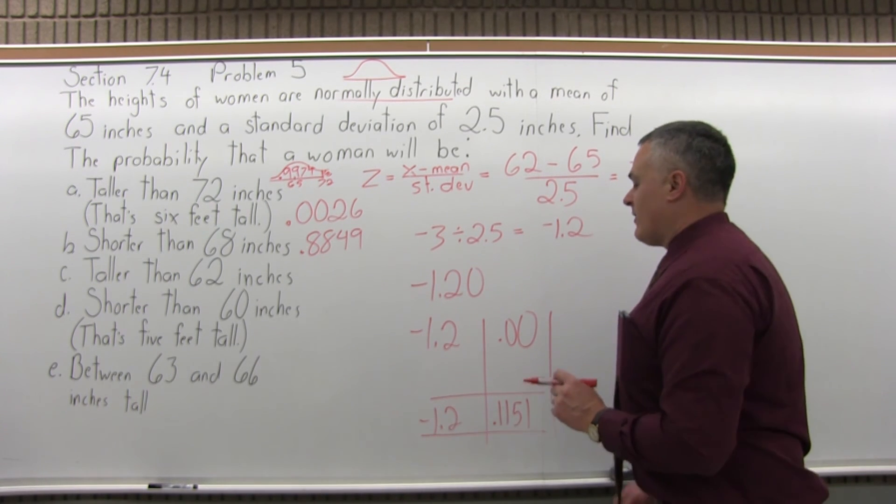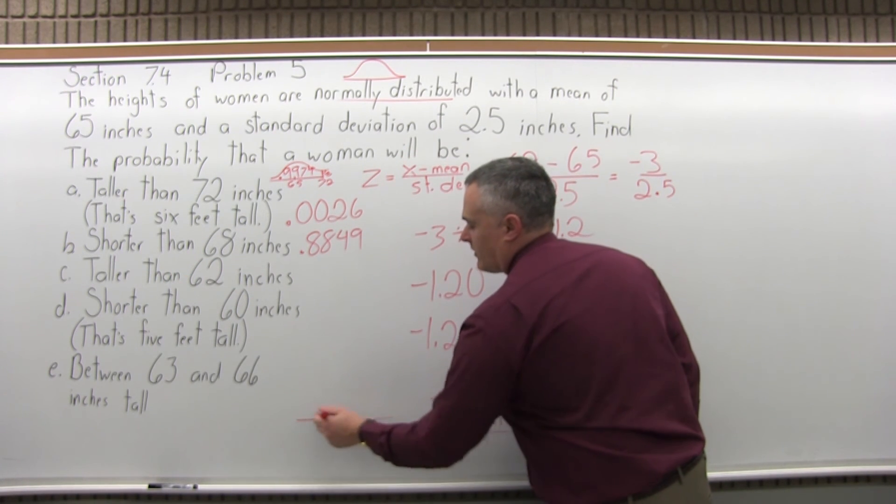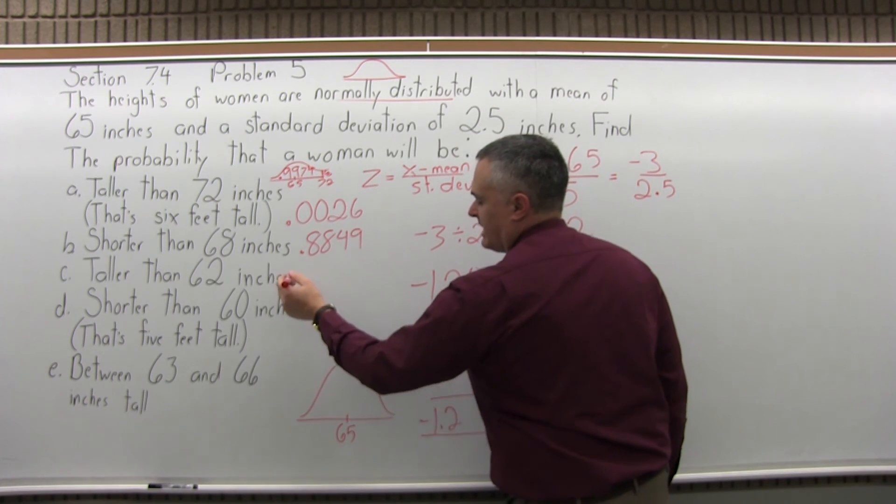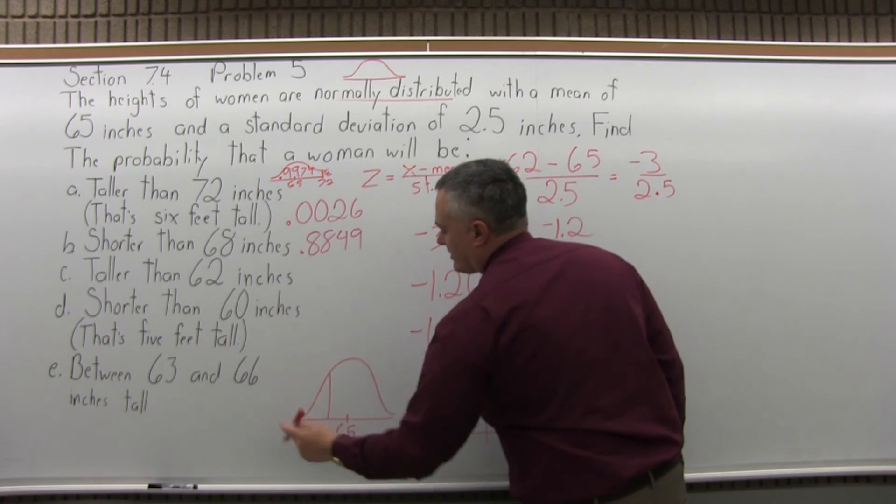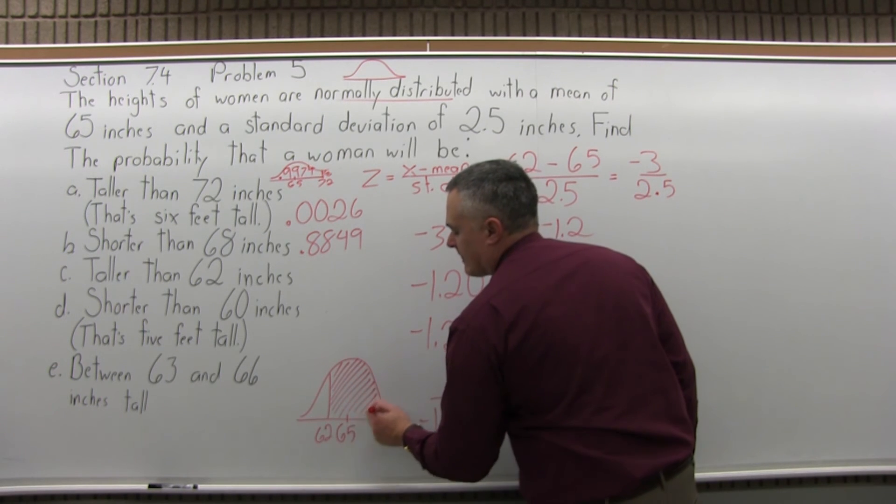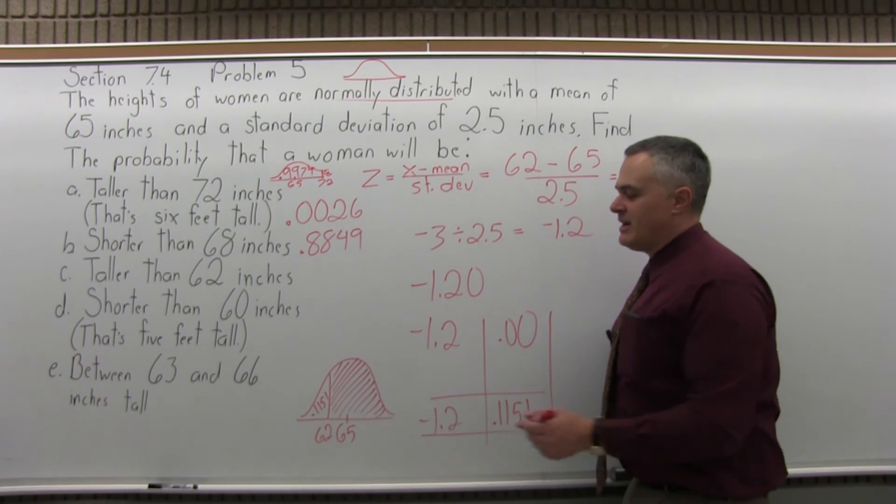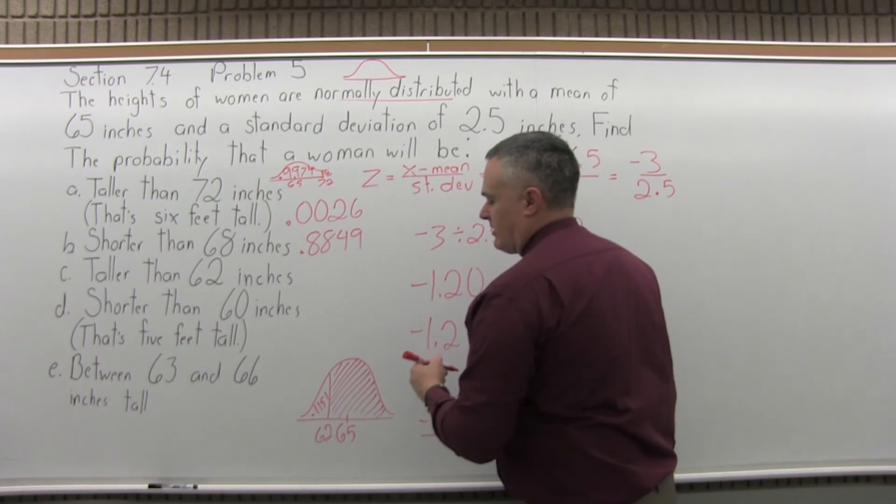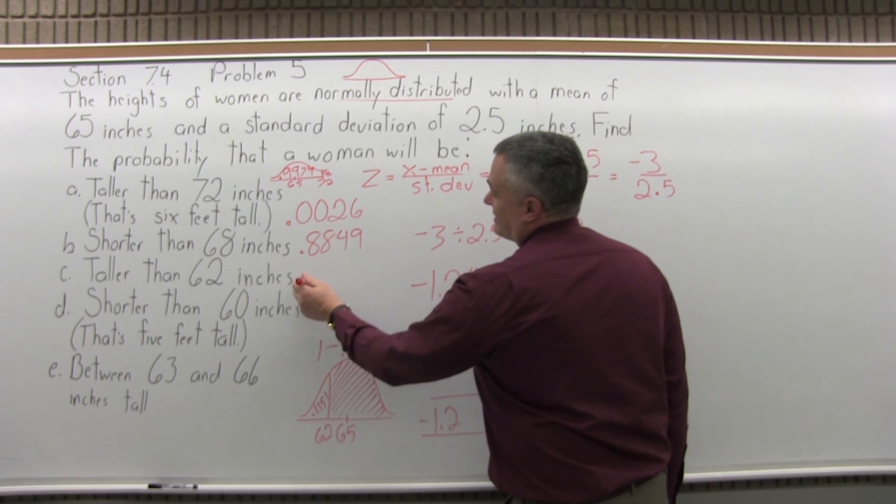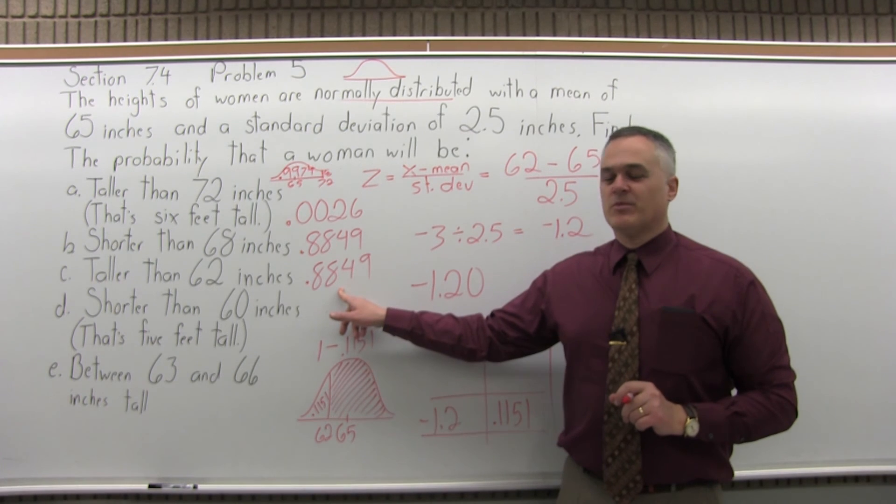Now, the thing is this question says taller than. So, again to get the visual, 65 is right in the middle because it's the average. 62 is less so it's going to be a little before or to the left. And the question asks for the probability of being taller than 62. Now, the .1151 from that standard normal chart is the blank area that I'm not interested in. I want the shaded area on the right of the 62. So, 1 minus what I got from the chart, .1151. And when you do the subtraction, it does come out to the same answer as the previous part. It's also .8849. It's an 88.5% probability.